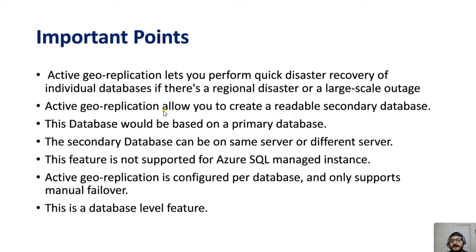Active Geo Replication allows you to create a readable secondary database. As discussed, the secondary database is read-only — you can only fetch data, you cannot write anything. This secondary database is based on the primary database since we are replicating data from it. The secondary database can be on the same server or a different server, so it is not mandatory to create a separate secondary server.